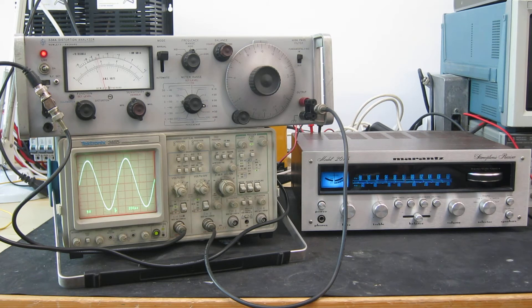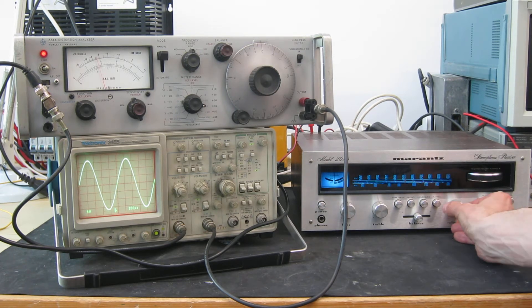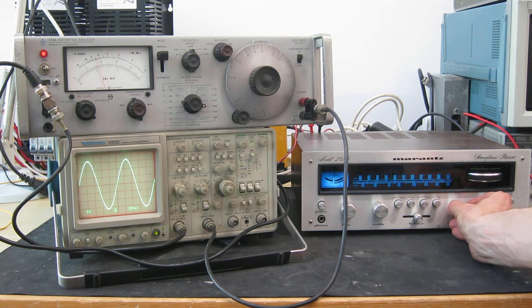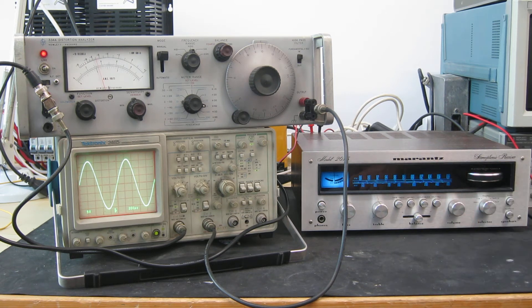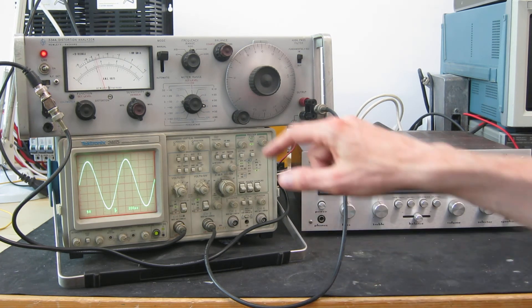So let's adjust things for 15 watts output. So that should be 15 times 8, square root. So it should be just about 11 volts for 15 watts output. So we'll adjust the level of the volume control so it's just under 11 volts. There's our nice clean output waveform. Now let's measure the distortion.